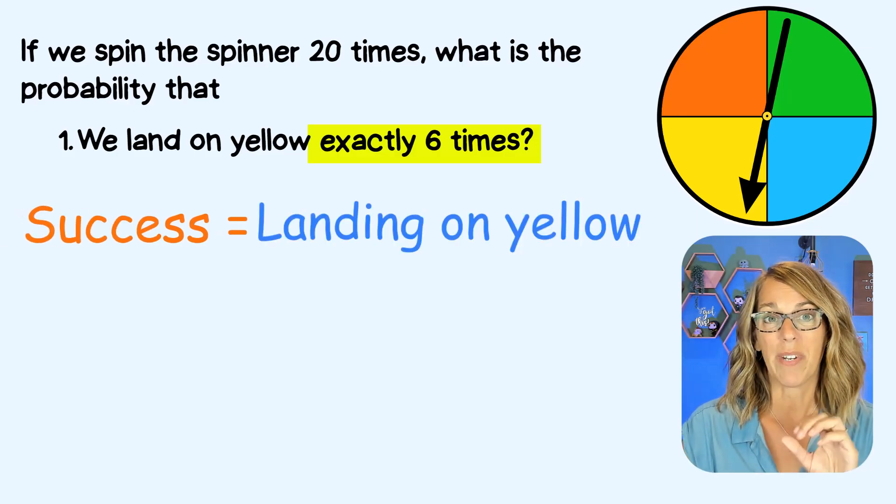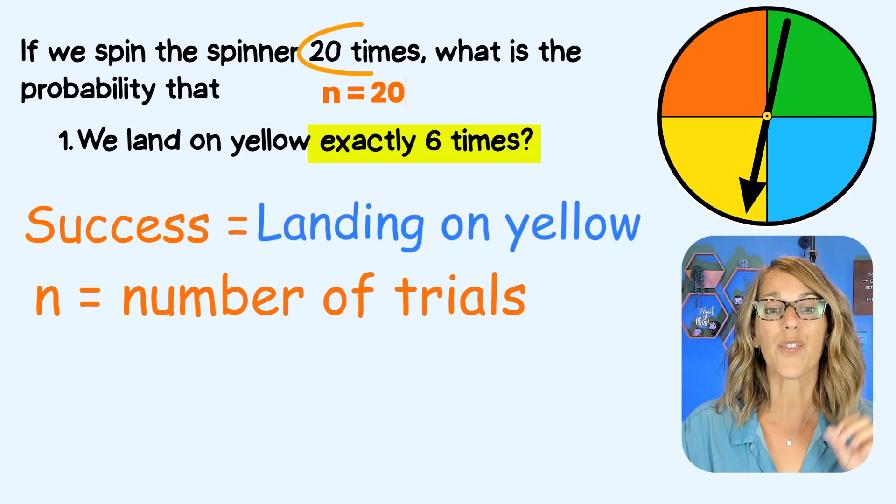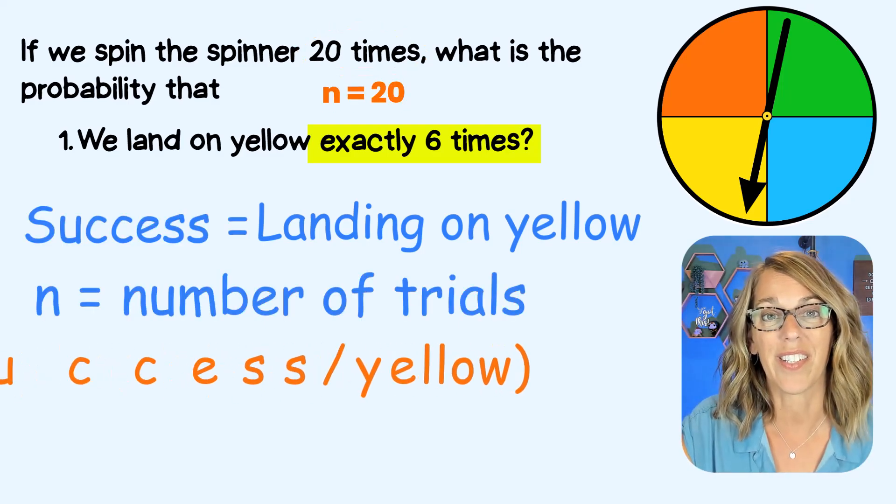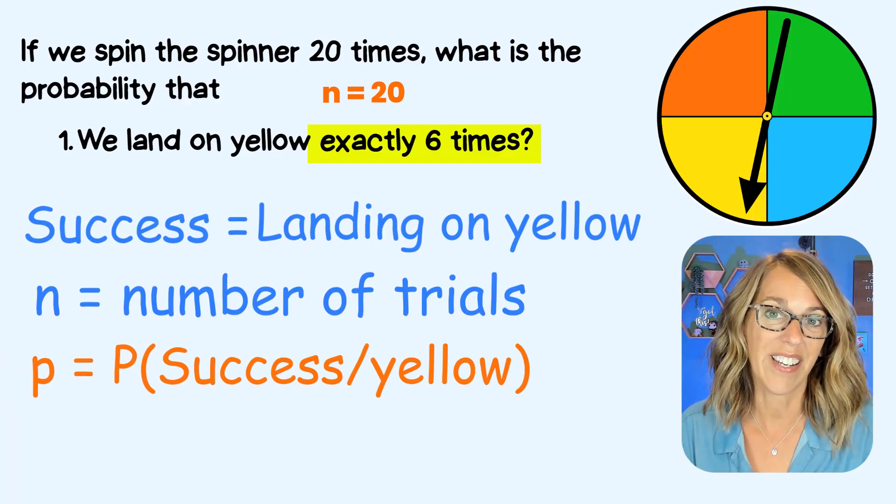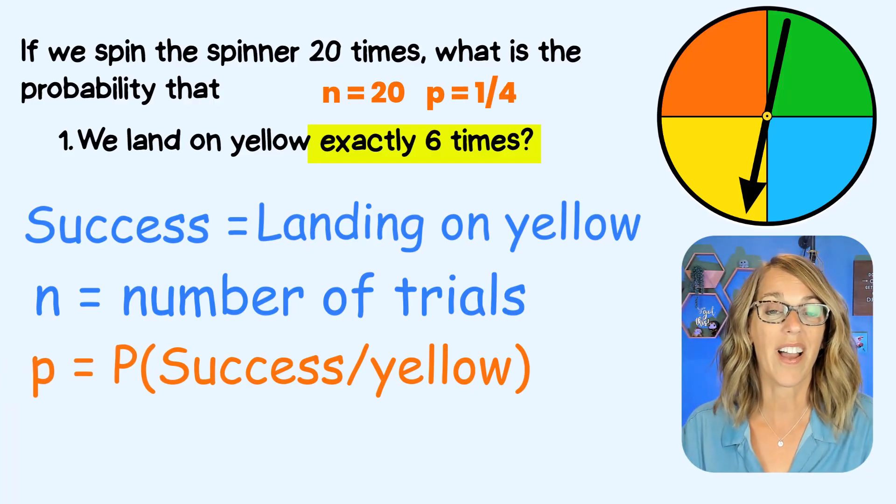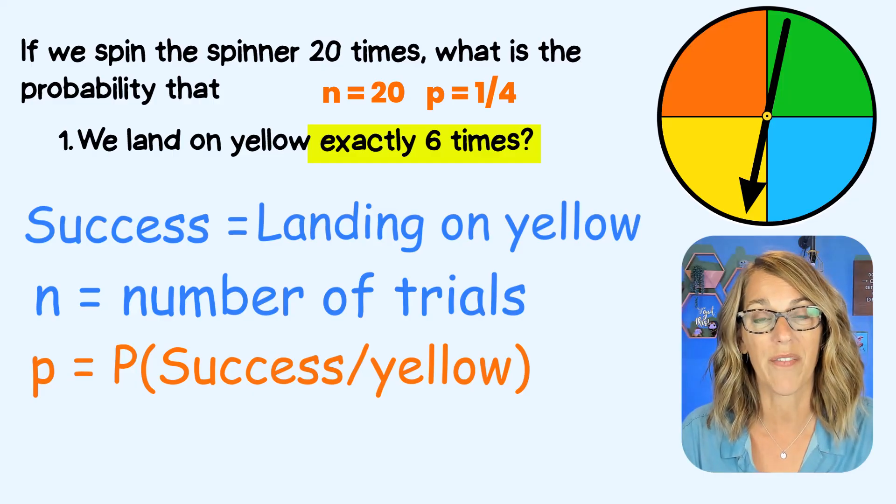We also need to know how many trials there are. There are 20 of these trials, 20 spins, and we need to know the probability of a success. That's the probability of landing on a yellow. There is one yellow out of those four colors. So P is equal to one fourth.